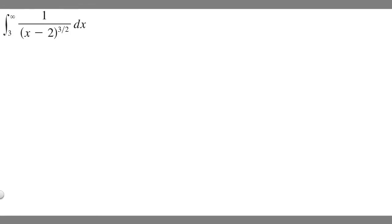In this problem, we're told to evaluate the improper integral from 3 to infinity of 1 over x minus 2 to the 3/2 dx. So in order to evaluate an improper integral like this, what you're going to want to do is rewrite it as a limit. This is going to be a Type 1 improper integral because we have an infinity in our bounds.